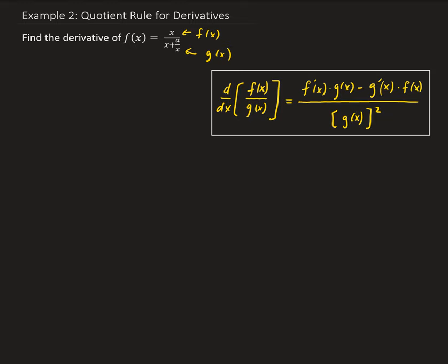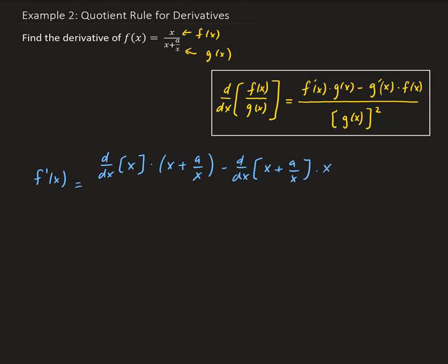Applying the quotient rule, we get f of x equals the derivative of x times g of x — so we have x plus a over x — minus the derivative of x plus a over x times x, all divided by the denominator squared.